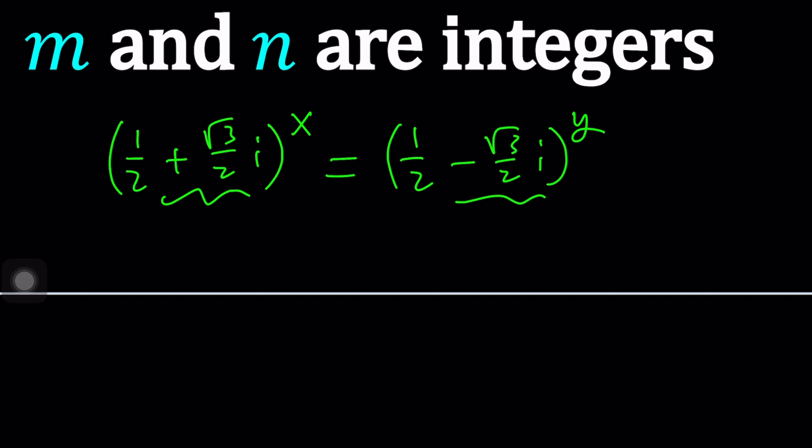So basically what that means is we can write one of them like this one as the reciprocal of the other, which means it can be written as (1/2 + √3/2 i)^(-1).